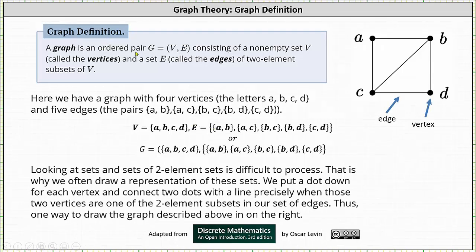A graph G is the ordered pair V comma E, consisting of a nonempty set V, called the vertices, and a set E, called the edges, of two-element subsets of V.